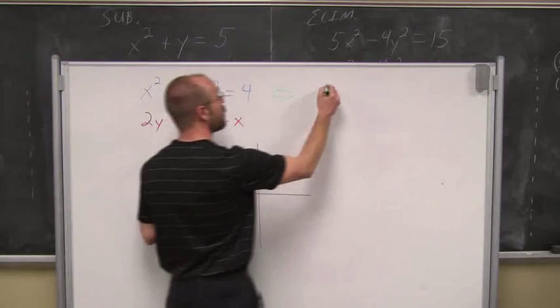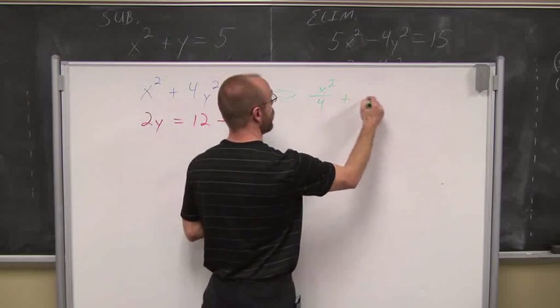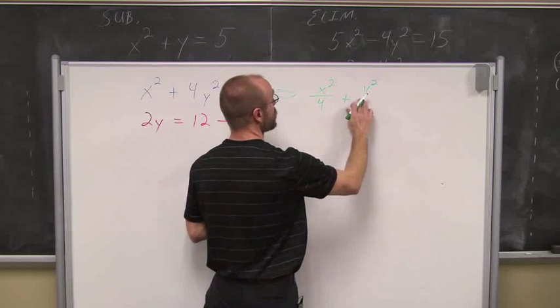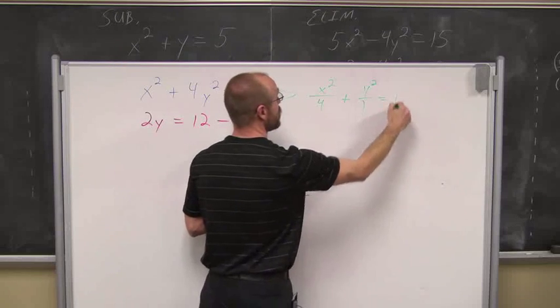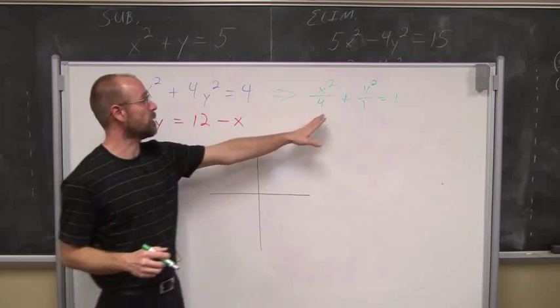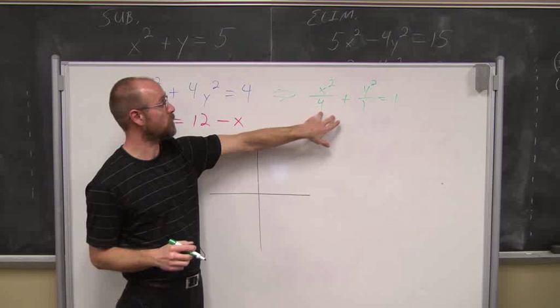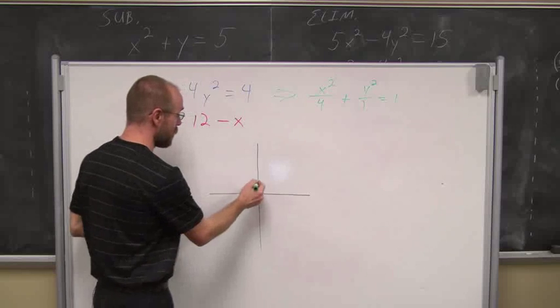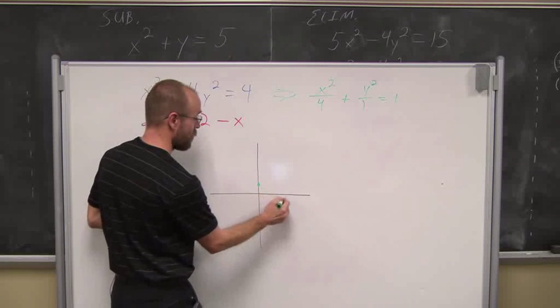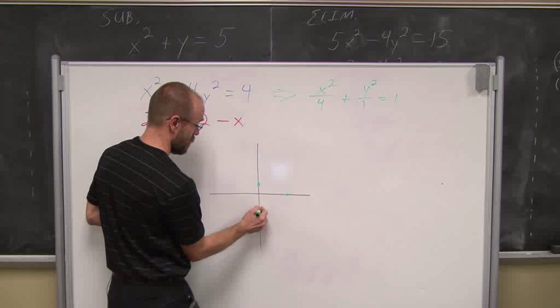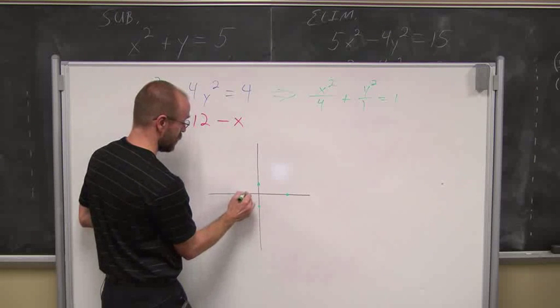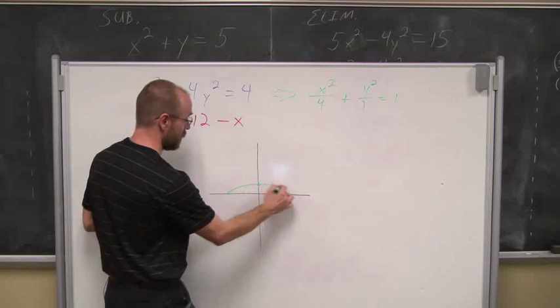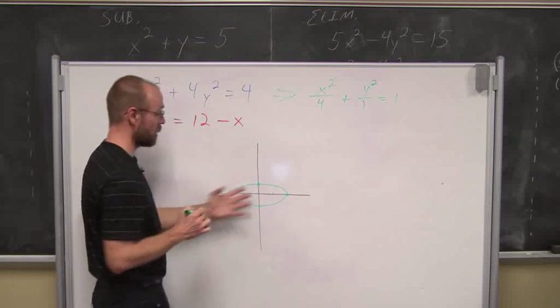If we put an ellipse in standard form, we set it equal to 1, we divide everything by 4. And we get x squared over 4 plus y squared over 1 equals 1. Now this is an ellipse that is stretched plus or minus 2 in the x and plus or minus 1 in the y. So let me just put those on the graph. This would be 1, 2, 1, 2, up 1, down 1. And if we graph that ellipse, it looks something like that.